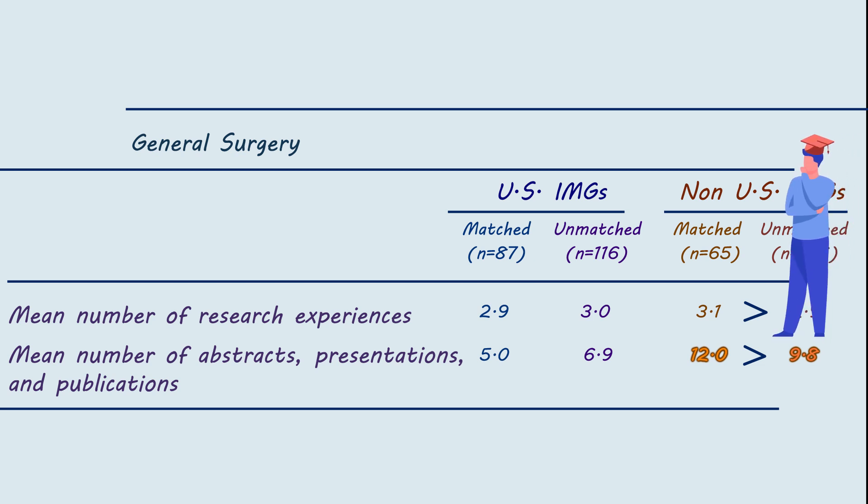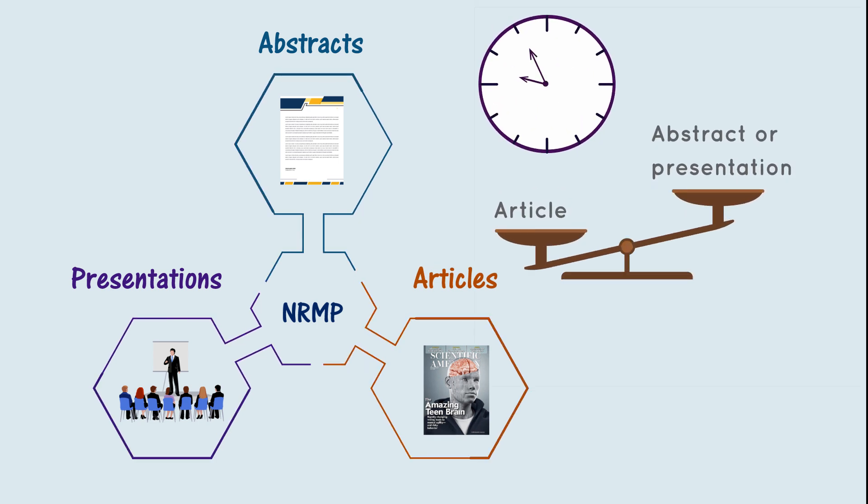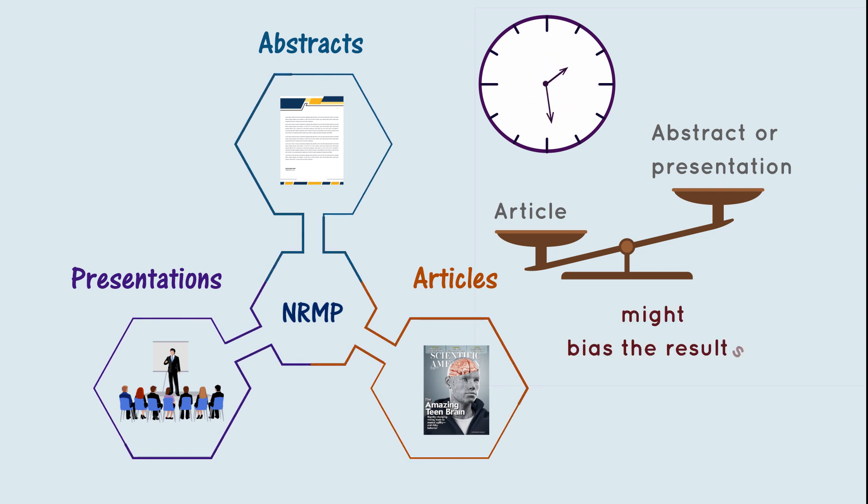This raises the question of whether IMGs should have more research experience when they apply to general surgery residency to increase their chances of matching. One thing to be careful about here is that the NRMP data combines the number of abstracts, presentations, and publications together. As you may all know, a full-text publication takes much more time than an abstract or presentation. This might bias the results, especially that multiple abstracts and presentations can come out of the same project, while it's harder to do that for full-text articles.